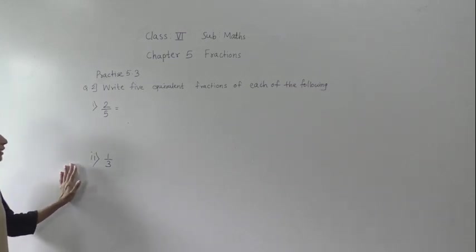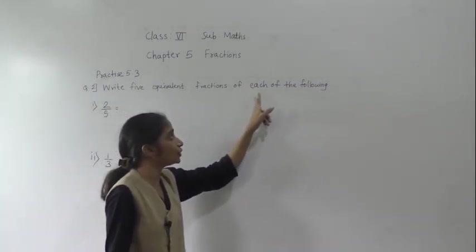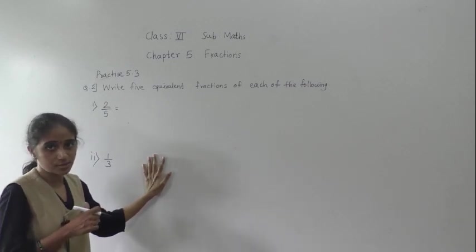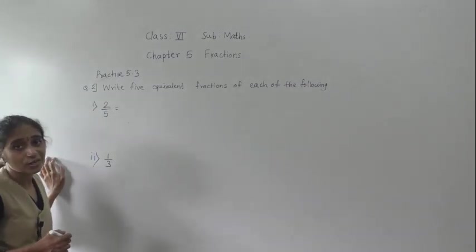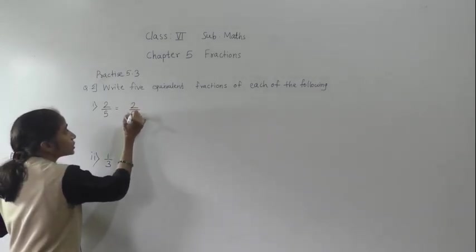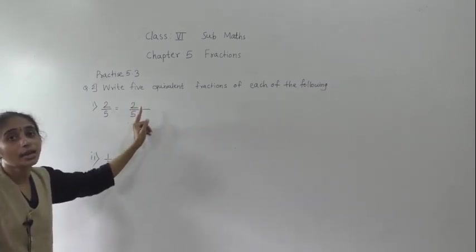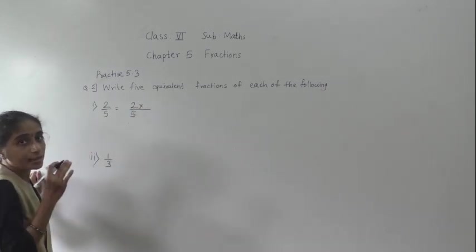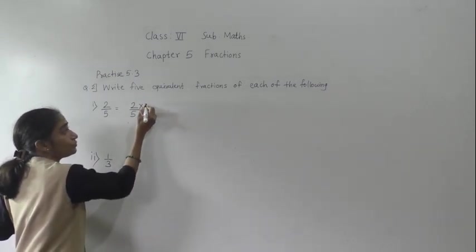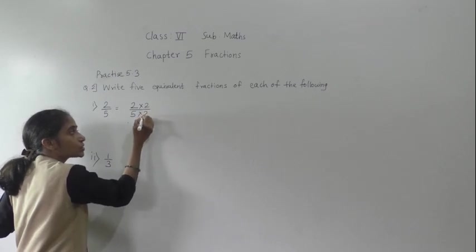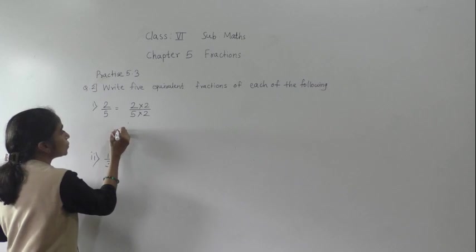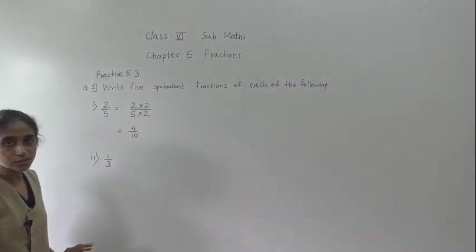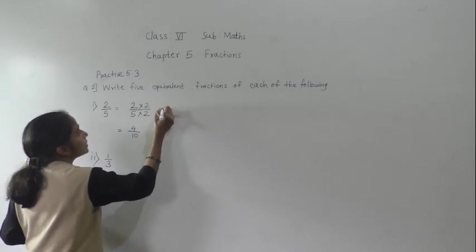Let's solve Practice 5.3, Question 2: Write 5 equivalent fractions for each of the following. We have to find 5 equivalent fractions for the given fraction. The given fraction is 2 upon 5. To find equivalent fractions, we multiply both the numerator and denominator by the same number. Multiplying by 2: 2 twos are 4 and 5 twos are 10, so we get 4 upon 10.